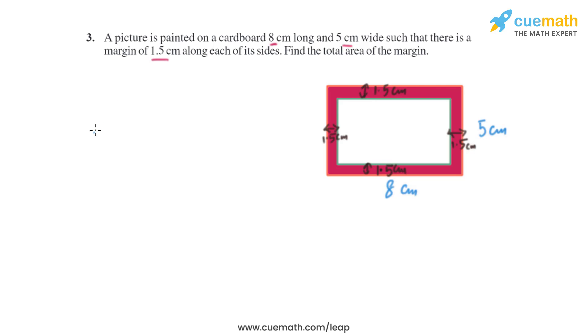So the length and breadth of the cardboard is given in the question - that is 8 centimeter and 5 centimeter - and there is a margin of 1.5 centimeter. We can easily find the area of the margin - that is the area of the bigger rectangle l₁b₁ minus lb, that is the area of this smaller rectangle.